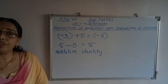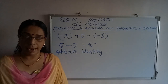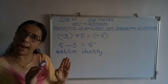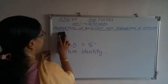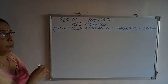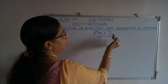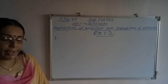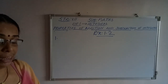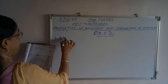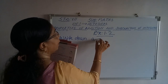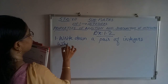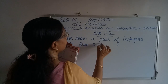Now we can see some exercise questions from your textbook, exercise 1.2. The first question: write down a pair of integers whose sum is minus 7. That means you have to find two integers such that when you add them, the answer you get is minus 7.